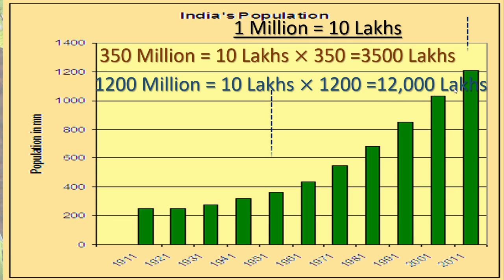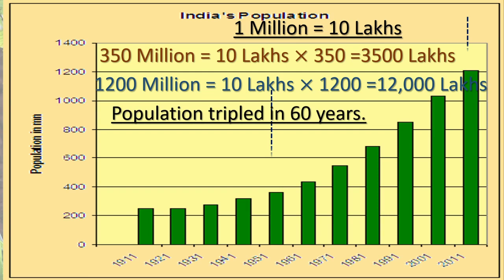12,000 followed by five zeros. When we compare the population of India from 1951 to 2011, we can say that the population tripled in 60 years. It is growing so rapidly — within 60 years, it tripled.